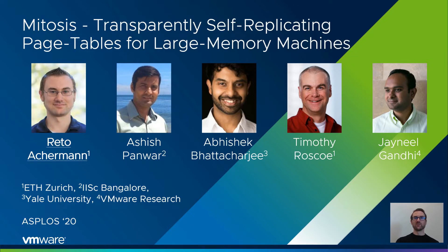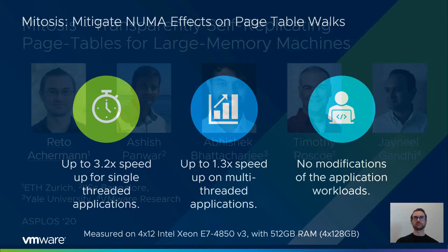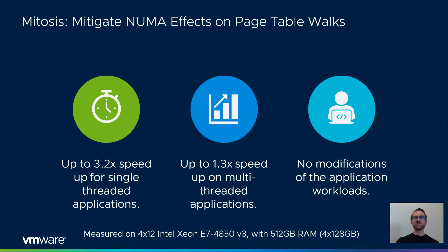This is joint work done with my colleagues Ashish, Abhishek, Malfi, and Neal. As a high-level summary, Mitosis is able to fully mitigate the NUMA effects on page table walks. This results in a speedup of up to 3.2x for single-threaded applications and 1.3x for multi-threaded applications by eliminating remote memory accesses during page table walks. Those numbers are measured on our prototype Linux implementation running on a four-socket Intel Xeon machine with 512 GB of RAM.